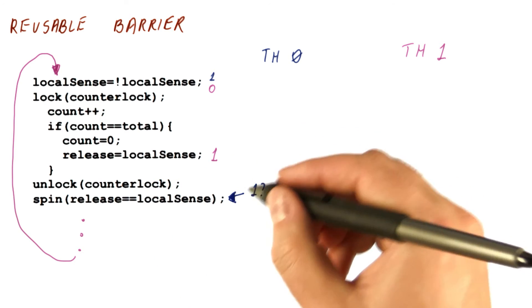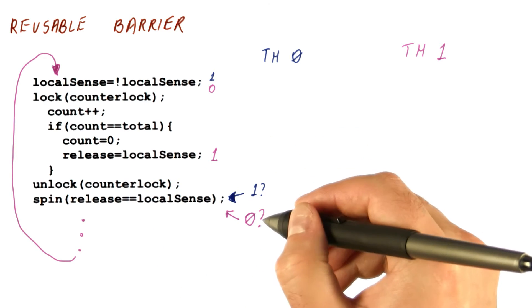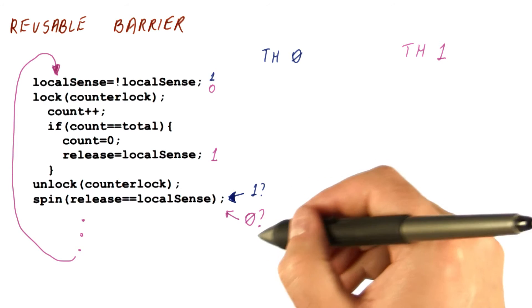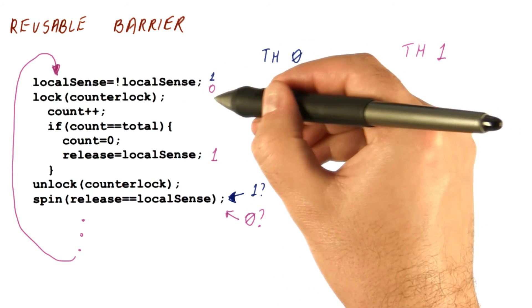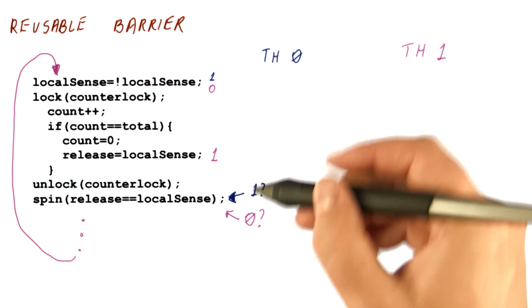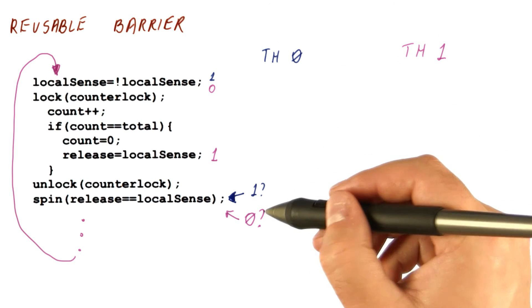And enters the spin here. But thread one is now checking whether the release has become zero, because it flipped the local sense. Now it's waiting for this value for the release. So they're waiting for different values.